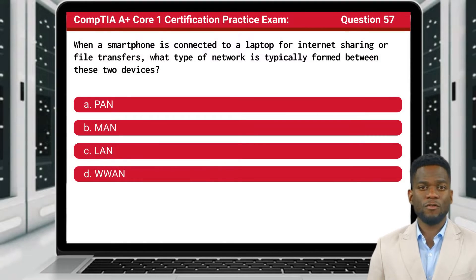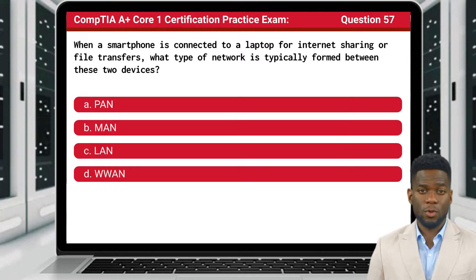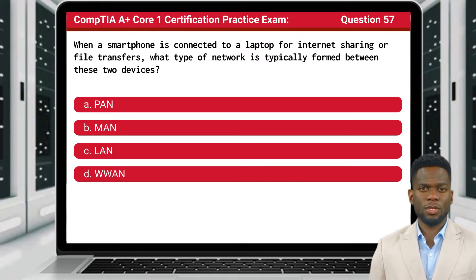Question 57. When a smartphone is connected to a laptop for internet sharing or file transfers, what type of network is typically formed between these two devices?